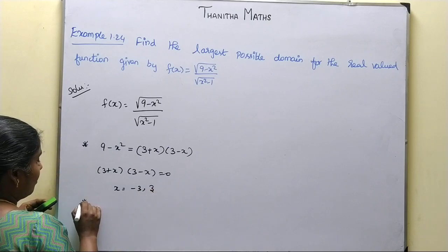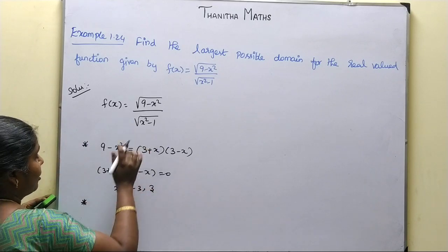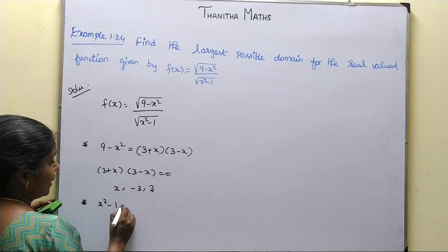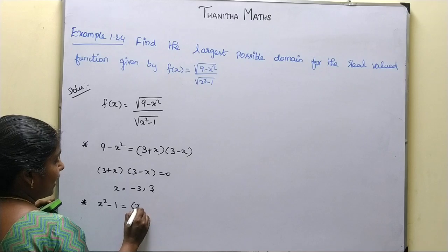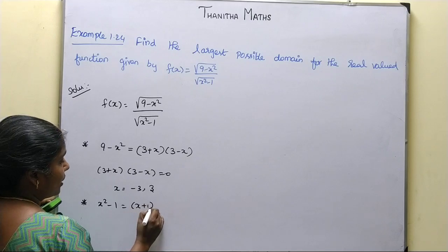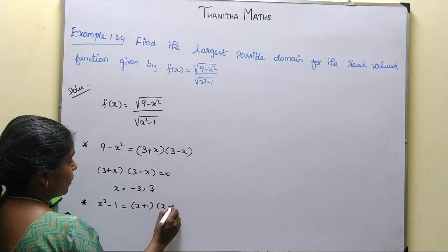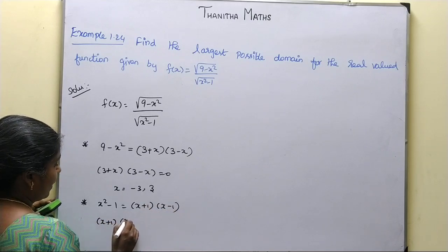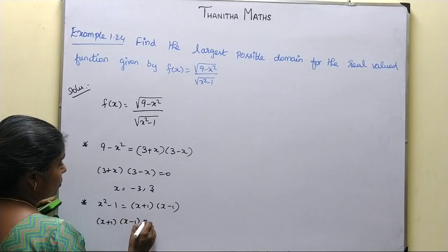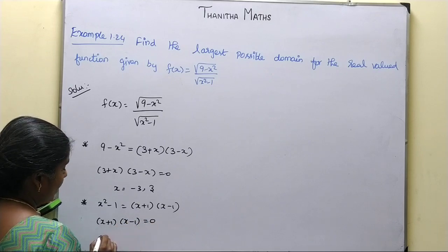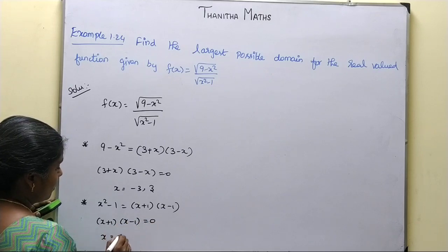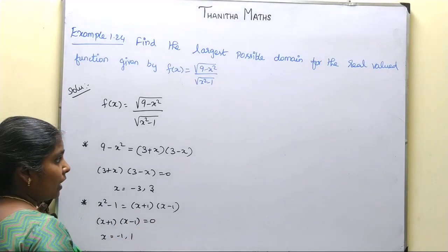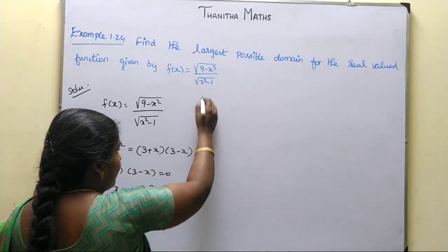Next, for the denominator: x² - 1 = (x + 1)(x - 1) = 0, so x = -1 and x = +1. We will omit these values. Now we will plot these critical points on the number line.